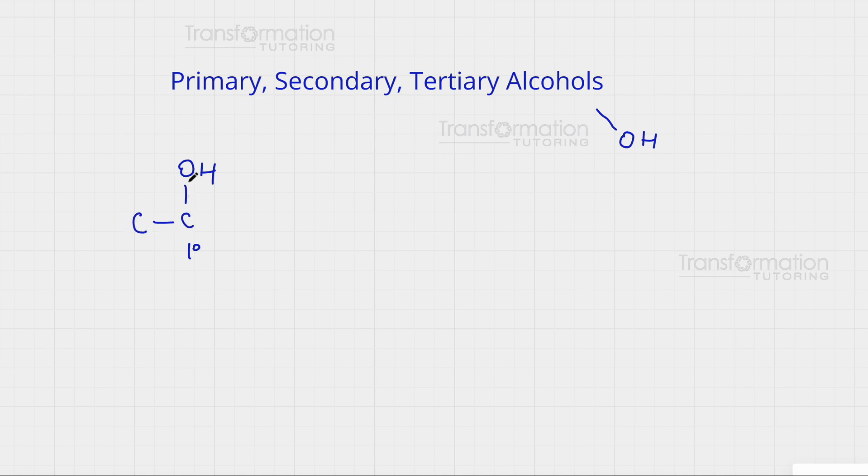If your OH group is attached to a carbon that is attached to two other carbons, then this will be a secondary alcohol. And if your OH group is attached to a carbon that is attached to three other carbons, then this alcohol would be tertiary.